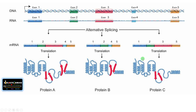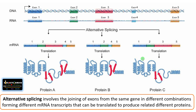Splicing is carried out by an enzyme complex called the spliceosome complex, where introns or non-coding sequences are removed and exons are joined together to form mature mRNA. Alternative splicing involves joining exons from the same gene in different combinations, forming different mRNA molecules that can be translated to produce related but different proteins. Thus, a single gene can code for many related proteins using alternative splicing.